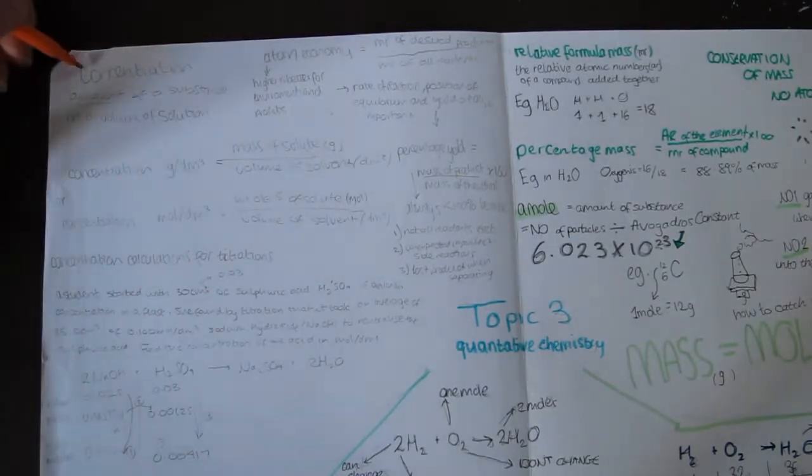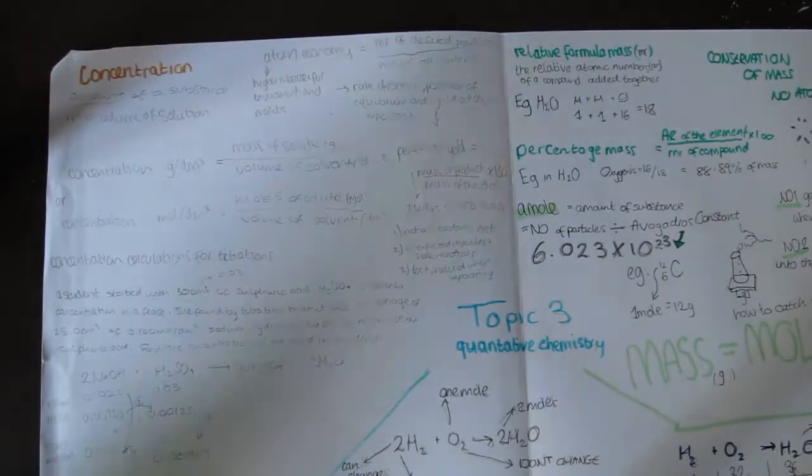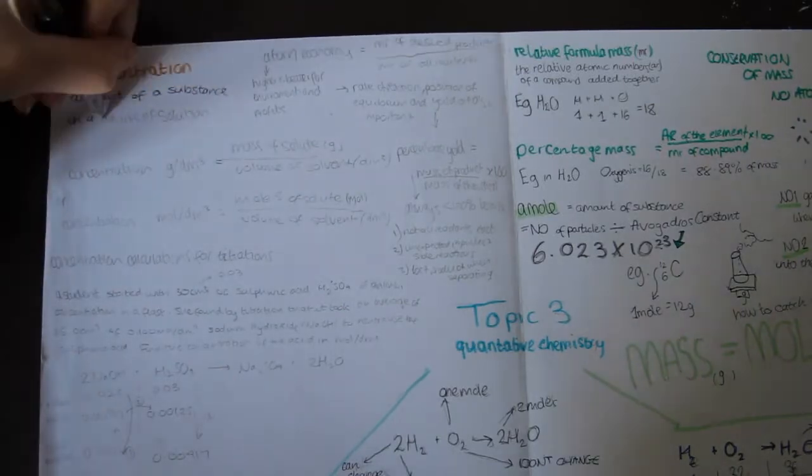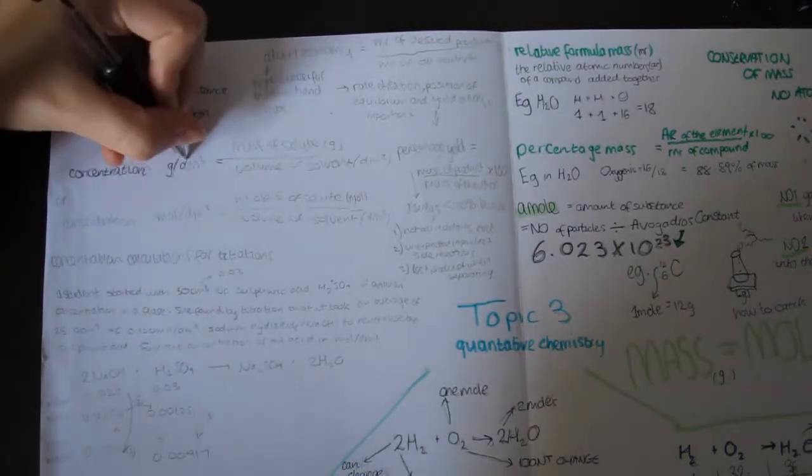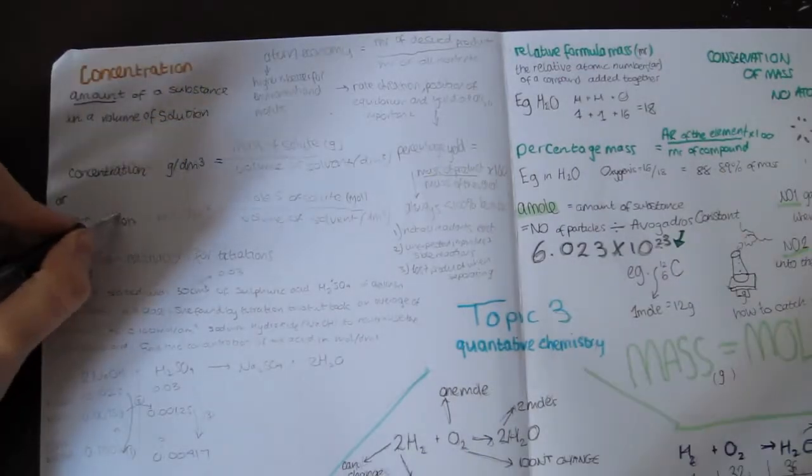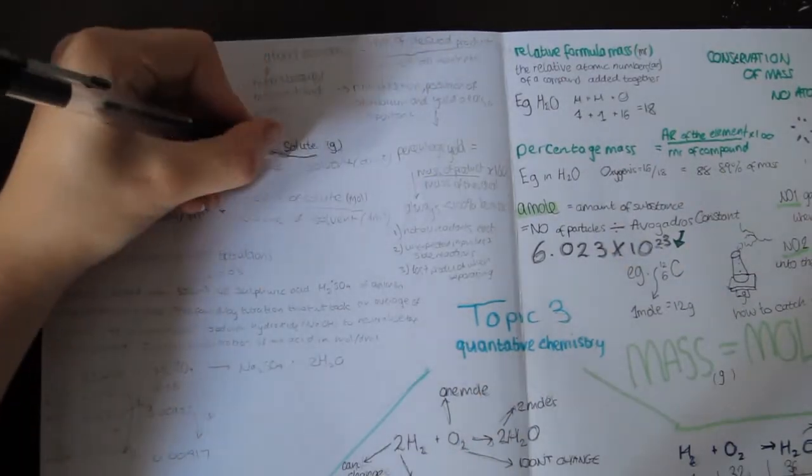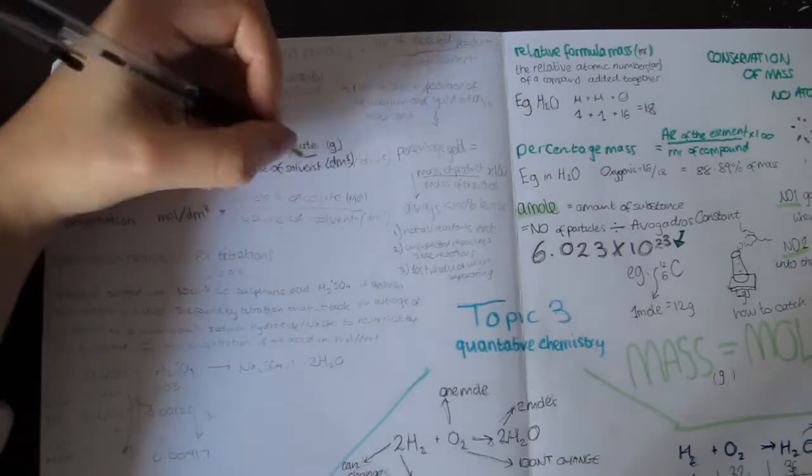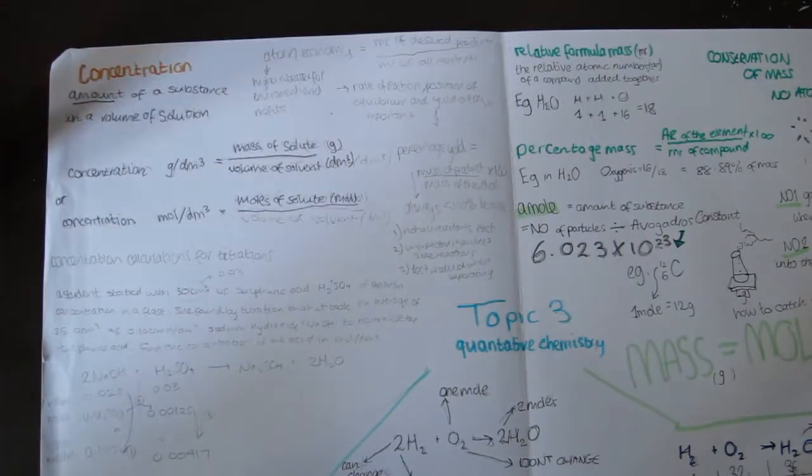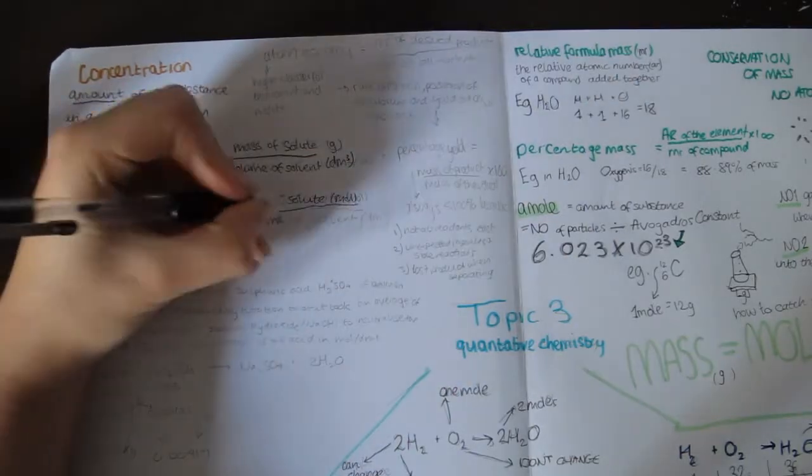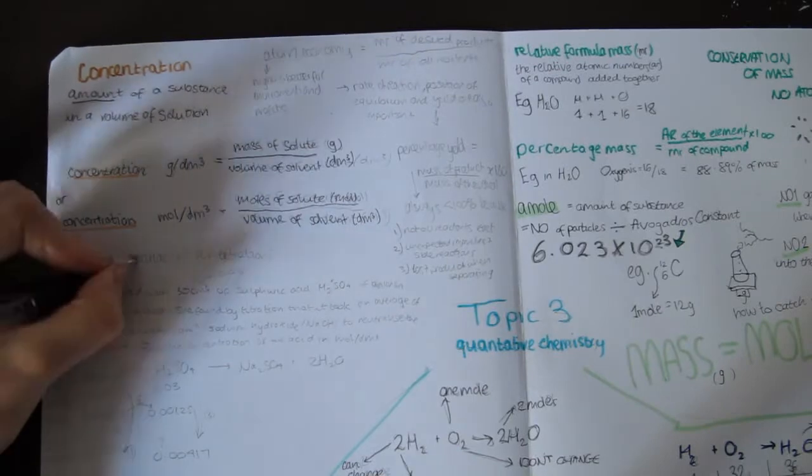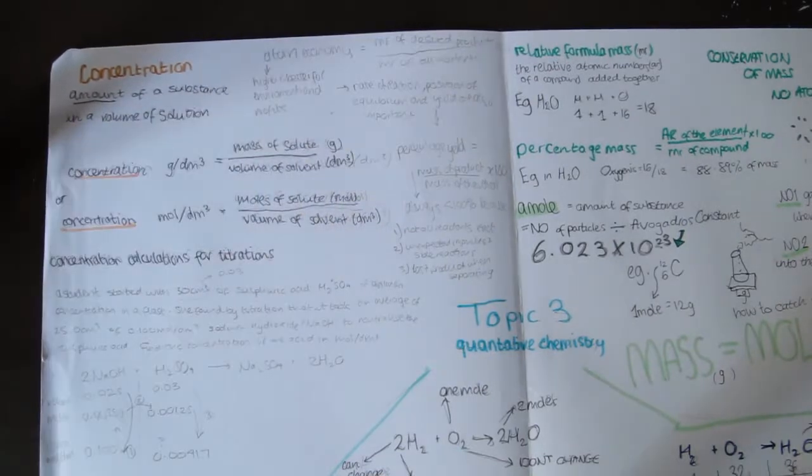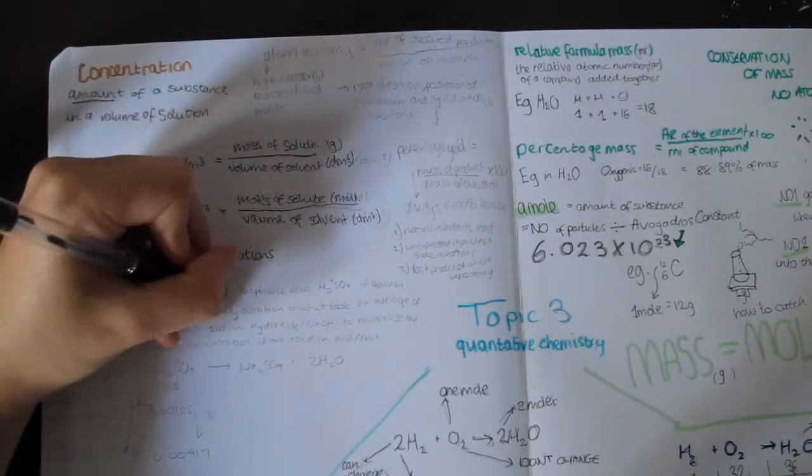Concentration is the amount of a substance in a volume of a solution. The more solute in the solution, the higher the concentration. The easiest way to measure the concentration is by measuring the mass and volume of the solution, then using this equation. Concentration in grams per decimetre cubed equals the mass of solute in grams, divided by the volume of solvent in decimetres cubed, or concentration in moles per decimetres cubed, moles of the solute divided by the volume of the solvent.